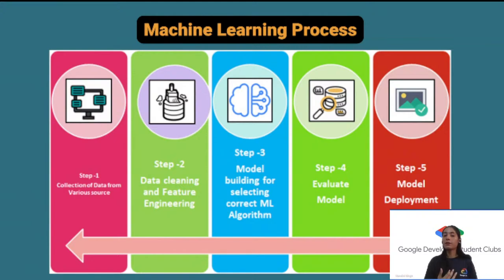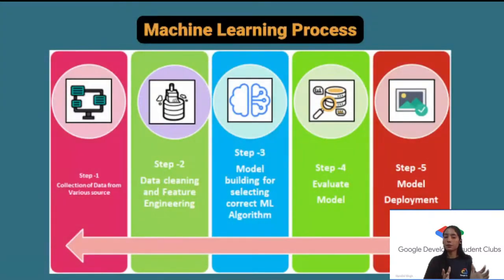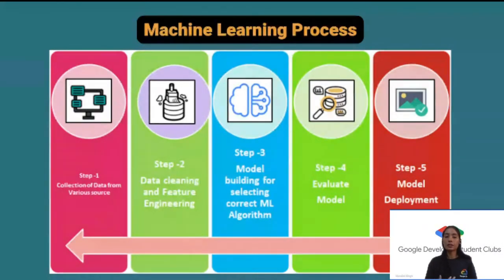Step 3 is model building. Once you understand your data and the required output, you decide what type of model is needed. You split the dataset — for example, 70% for training and 30% for evaluation. Step 4 is evaluating the model using the test data with metrics like accuracy, precision, recall, and F1 score. Once you achieve good accuracy, around 75 to 80 percent, your model is ready for deployment.